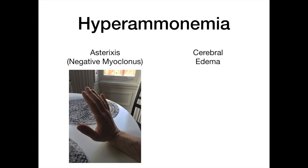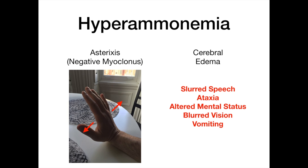The other classic symptom is cerebral edema. This toxic accumulating ammonia ultimately goes to the brain and causes an osmotic shift, causing cerebral edema. When the brain swells, you get symptoms including slurred speech, ataxia, altered mental status where the person can become delirious, confused, not know their name or where they are, blurred vision, and vomiting. These levels accumulating are extremely toxic and can lead to death if left untreated.